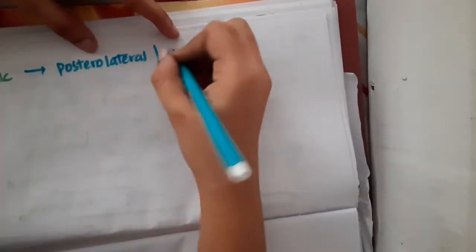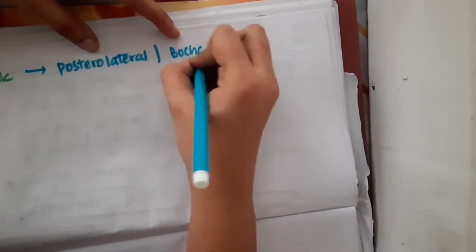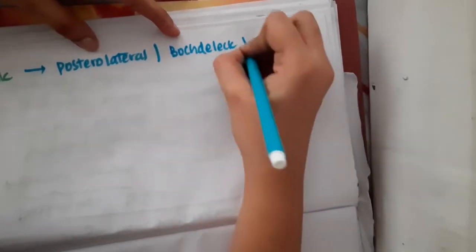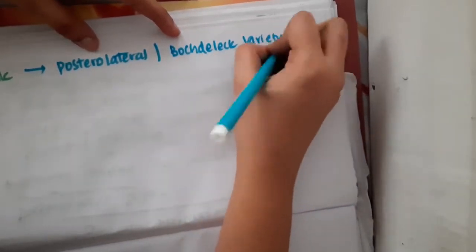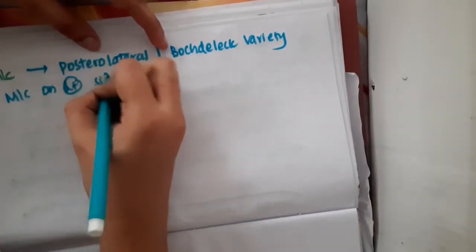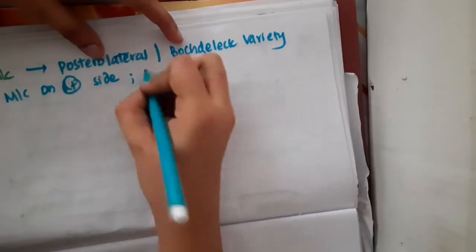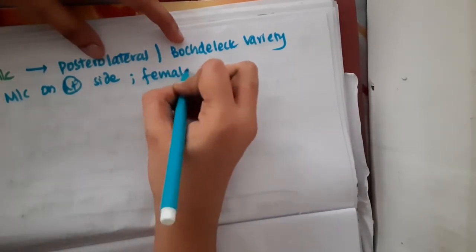The most common type of congenital diaphragmatic hernia is posterolateral or Bochdalek variety. It is most commonly seen on the left side in females.